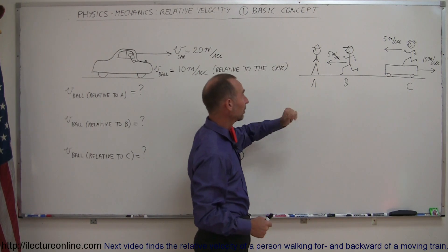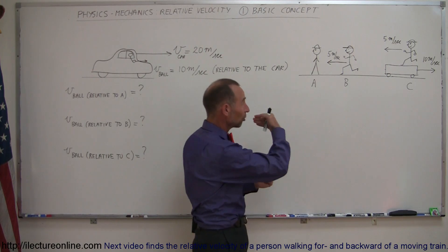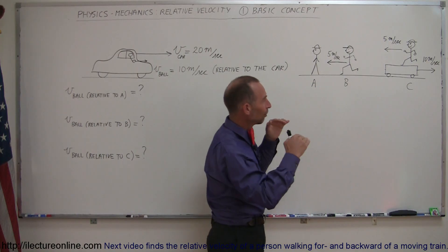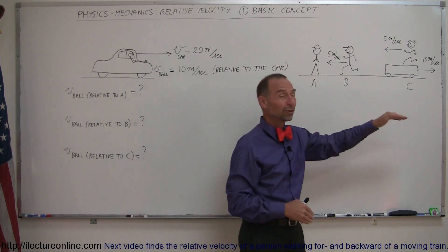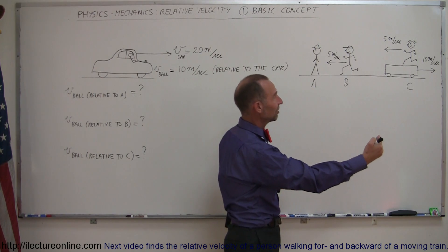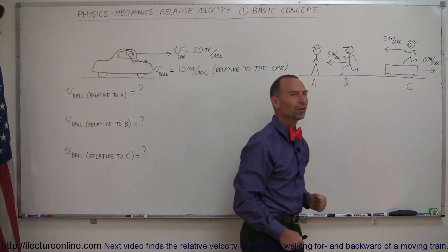Observer A is just standing by the side of the road, not moving. Observer B is running at 5 meters per second towards the car. And then Observer C is on a platform on wheels that is moving to the right at 10 meters per second. The person, Observer C, is running at 5 meters per second relative to this car this way.